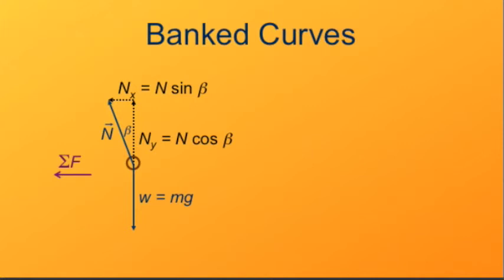We know something about these forces that they're related to the weight of the vehicle. The vertical direction forces have to exactly cancel. So that means that the vertical component of the normal force has to be exactly opposite the vertical component of the weight force. So we know then that N cosine beta is equal to mg.